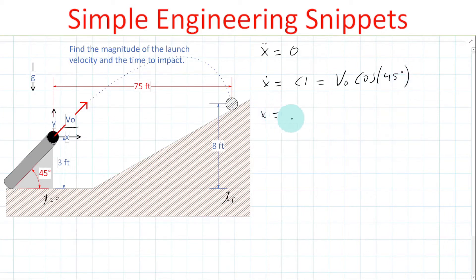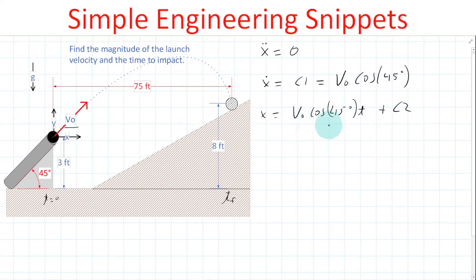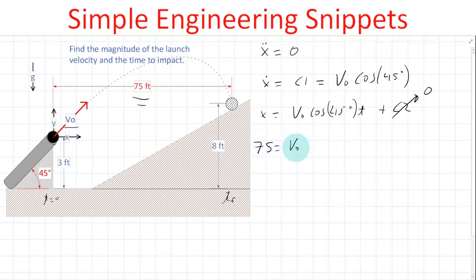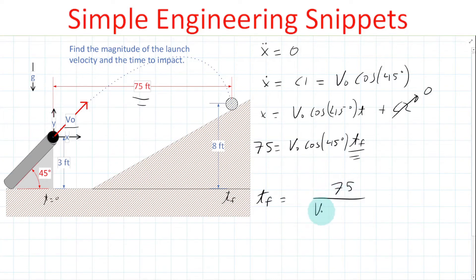Integrating that expression again gives X equal to V-naught cosine 45 degrees times time plus another integration constant C2. At time equal to zero, X is equal to zero, so C2 is equal to zero. We have an expression for X with respect to time. We also know that at impact, time equals TF and X equals 75. So 75 equals V-naught cosine 45 degrees times TF, and solving: TF equals 75 over V-naught cosine 45 degrees.